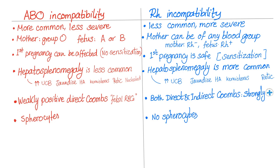ABO incompatibility is more common but less severe. RH incompatibility, on the other hand, is less common but more severe.